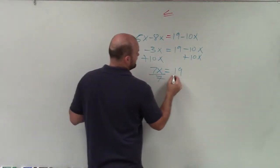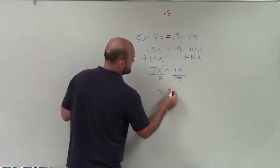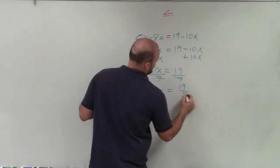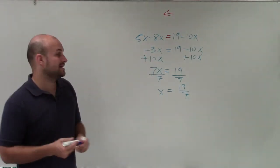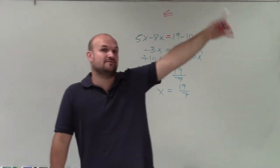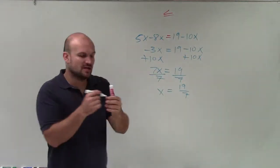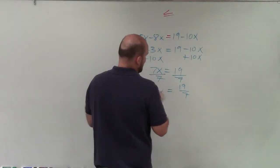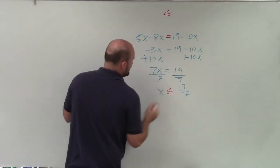Then divide by 7, divide by positive 7. x is equal to 19 over 7, which cannot be simplified. Now, since I did not multiply or divide by a negative number, my inequality symbol is going to remain the same. If I would have multiplied by a negative number, then I'd have to switch the inequality symbol around. But since it's the same, I'm going to now re-enter it back in there.